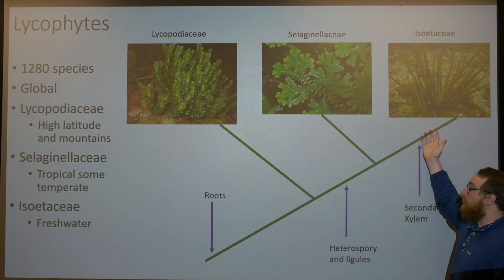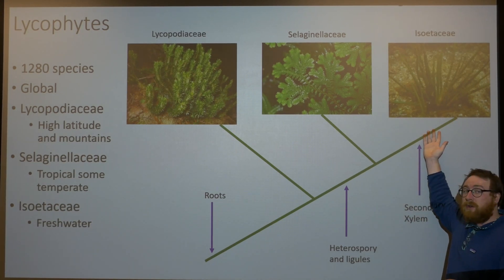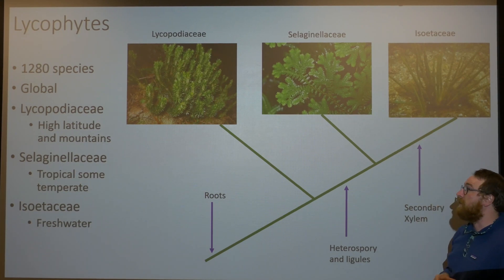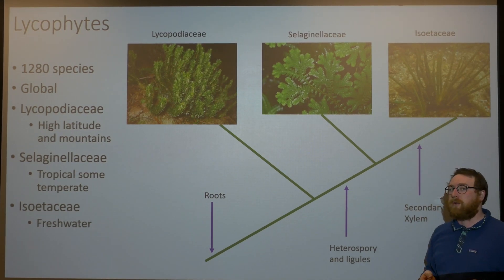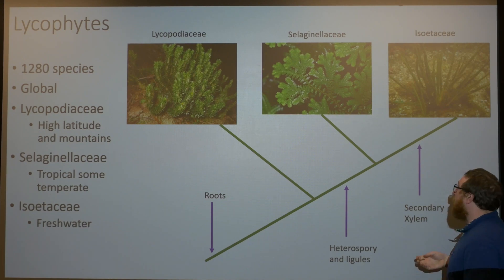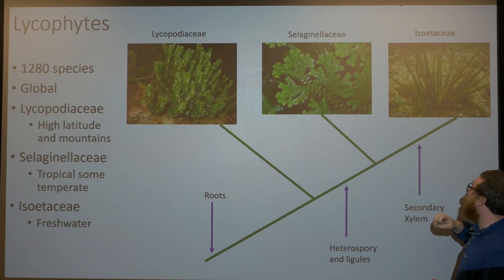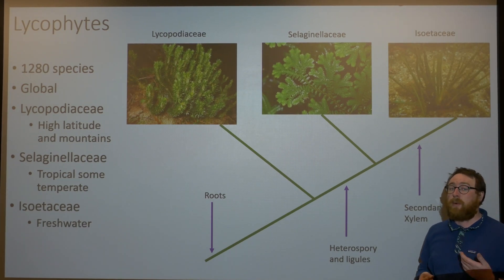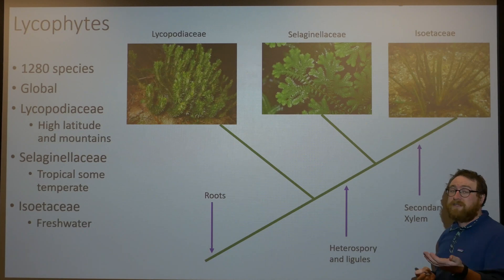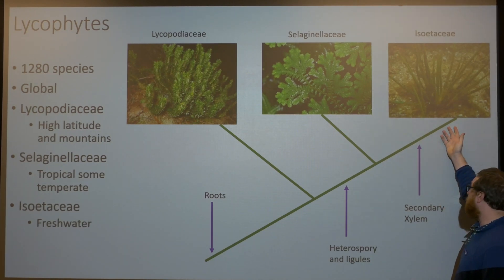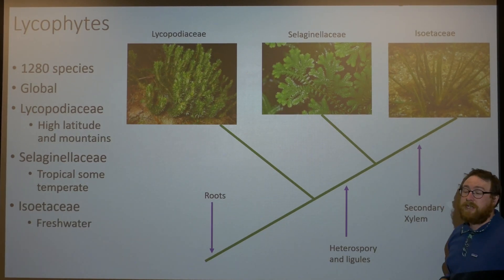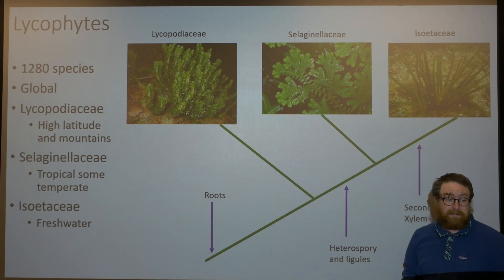And lastly, probably one of the more interesting groups in the lycophytes is the Isoetaceae. This is a freshwater group that has a lot of important adaptations that we don't see until we get almost to gymnosperms, especially some of their xylem tissue and how that's arranged.